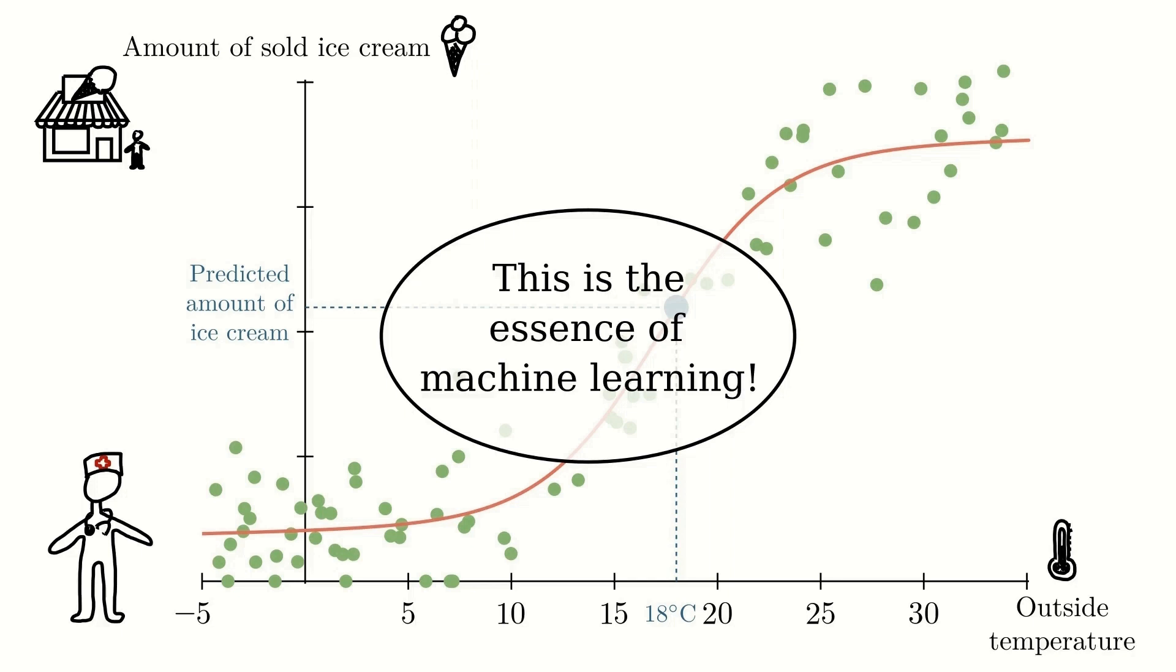The machine learning models you encounter in your everyday life, in social media apps, streaming services and so on are more advanced, but the principle is exactly the same. So, now we know the essence of how machine learning works, but how can this actually be used to help doctors save lives?